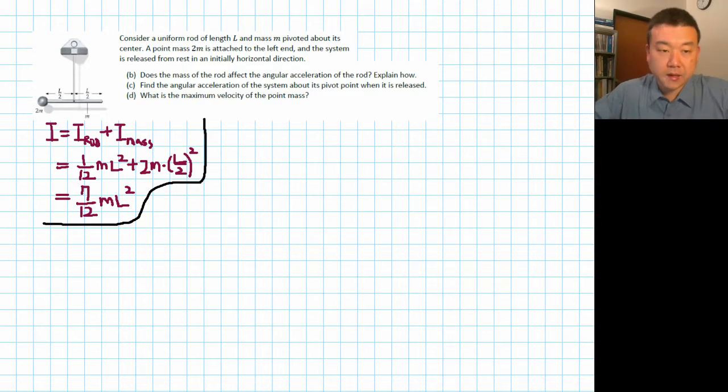Part B asks, does the mass of the rod affect the angular acceleration of the rod? Yeah, it does. You can actually look at it in the calculation here. Because the rod is being supported at the center of mass, it doesn't exert any torque. The weight of the rod doesn't exert any torque, but it does add to the rotational inertia.